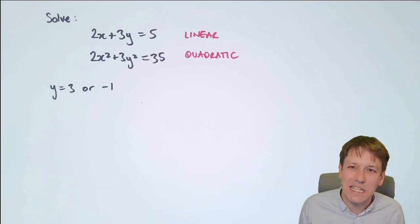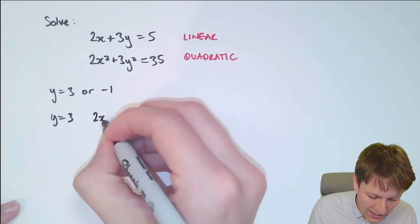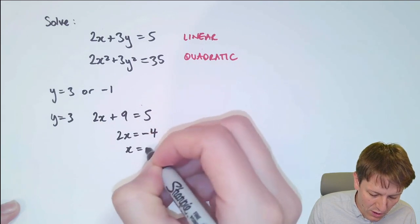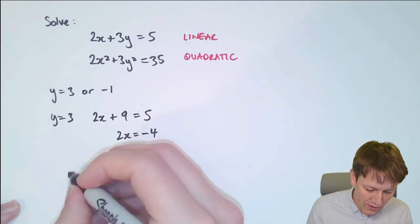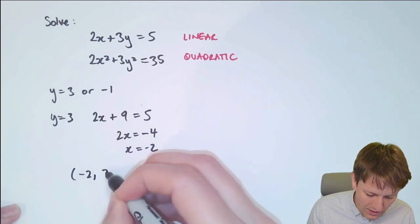Hang on to the end for a full explanation of that. If we substitute y equals 3 into the linear equation, we get 2x plus 9 equals 5. That gives me 2x equals minus 4, or x equals minus 2. So I've got one solution to these equations, which is minus 2, 3.